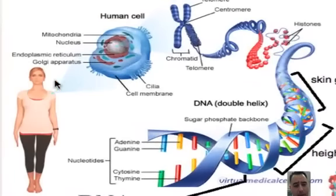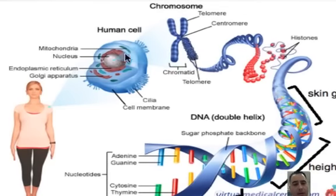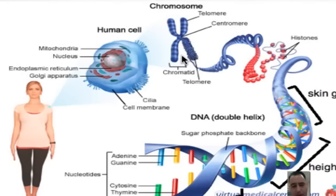Let's start with the human being. We're going to zoom into one of our body cells, and here we have the nucleus. Inside the nucleus there's DNA in chromosome form. A chromosome is just DNA wrapped around histone proteins tightly so that we can make this chromosome form, which is easy for cell division — it's easier to divide the DNA when it's in chromosome form than when it's all spaghetti-like and disorganized.